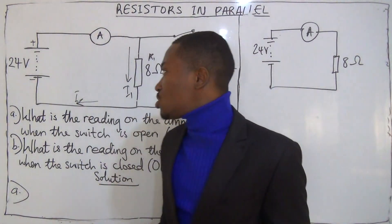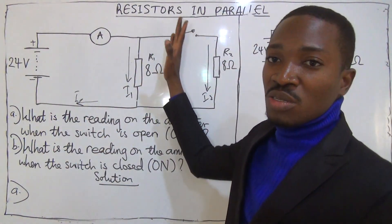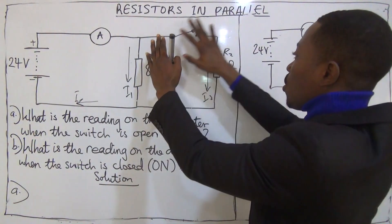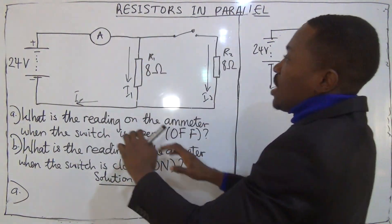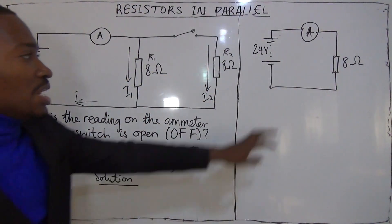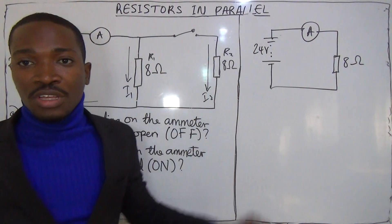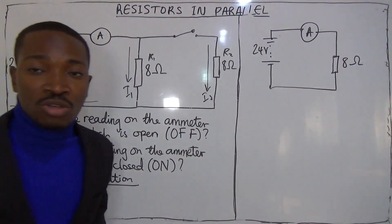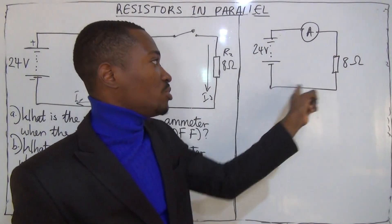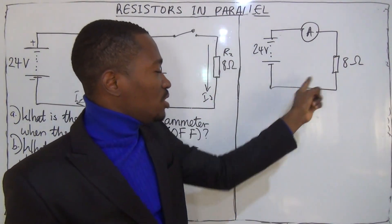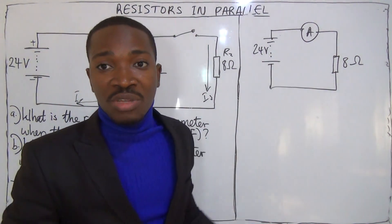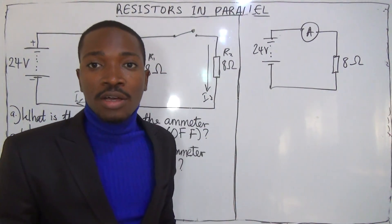When the switch is open, it means the right-hand side is completely cut off and this is all that is left in the circuit. The current flowing in this particular circuit is what the ammeter will read.